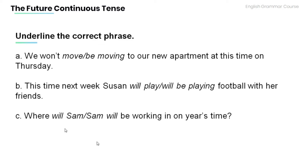And now it's time for you to practice on your own. Read the following sentences and underline the correct phrase. A. We won't [move / be moving] to our new apartment at this time on Thursday. B. This time next week Susan will [play / be playing] football with her friends. C. Where will [Sam / Sam will be working] in one year's time?